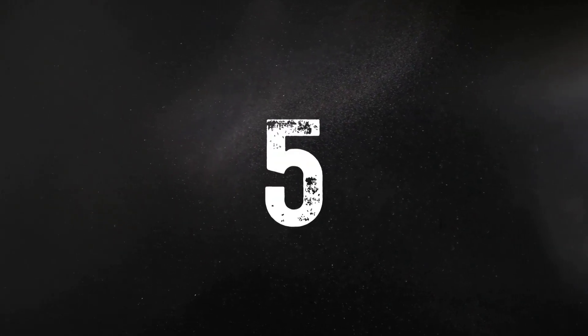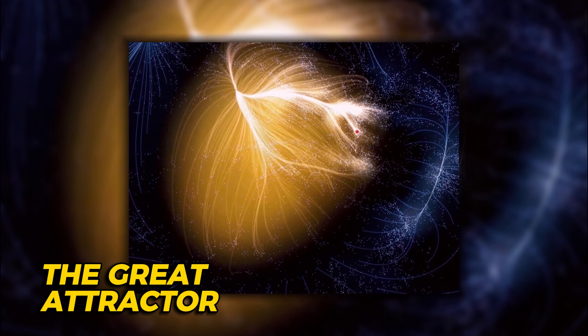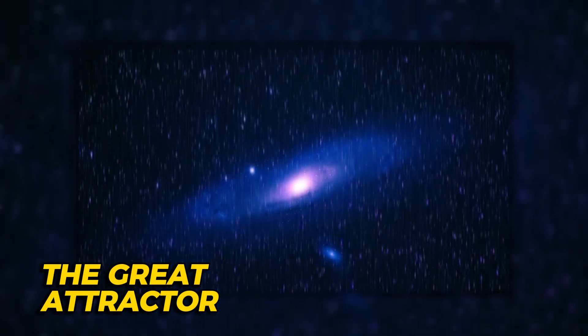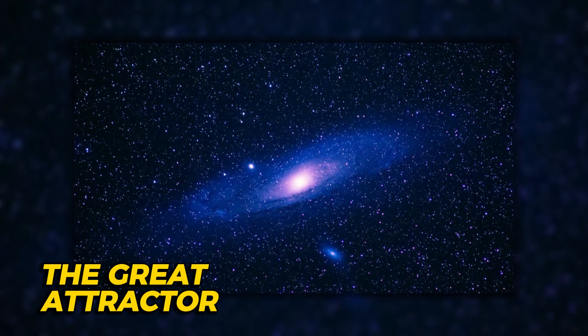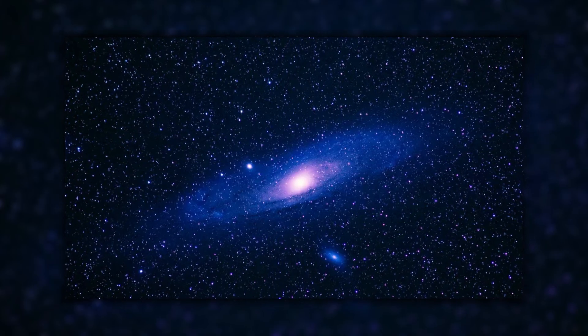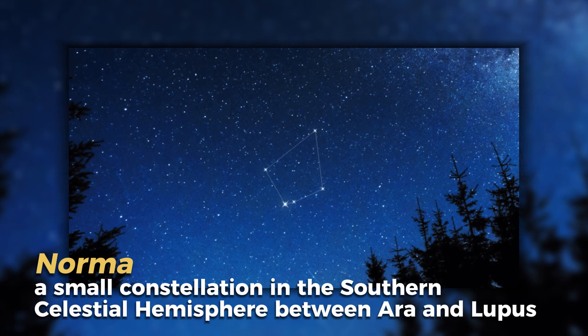The Great Attractor is a mysterious region of space that is pulling our galaxy and millions of others towards it at a speed of 630 km per second or 391 miles per second. It's located in the constellation Norma, about 250 million light years away from Earth.